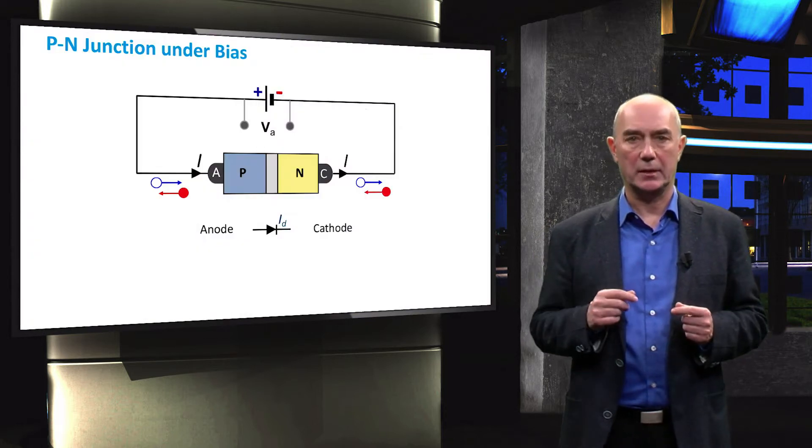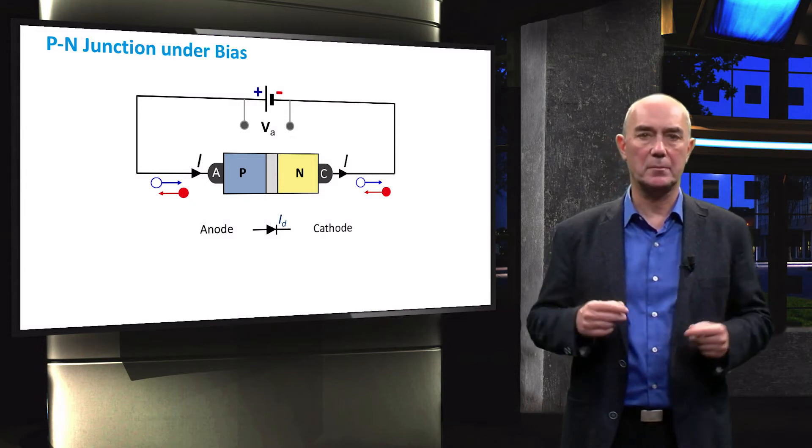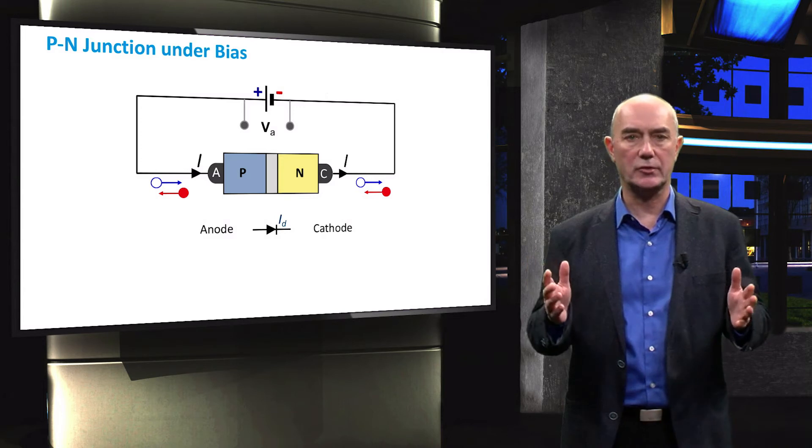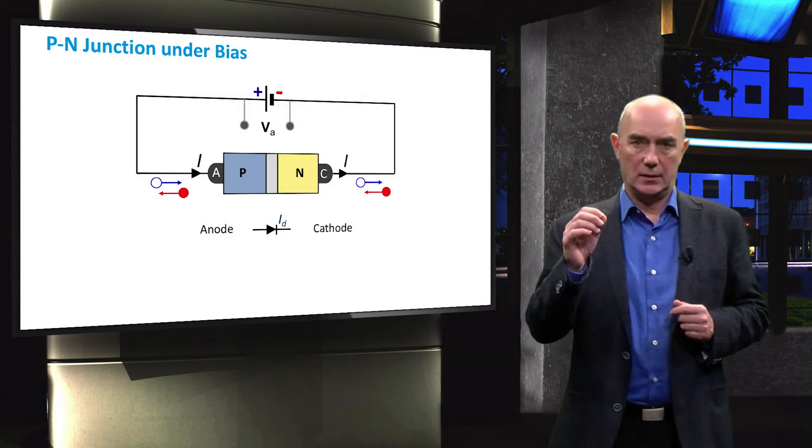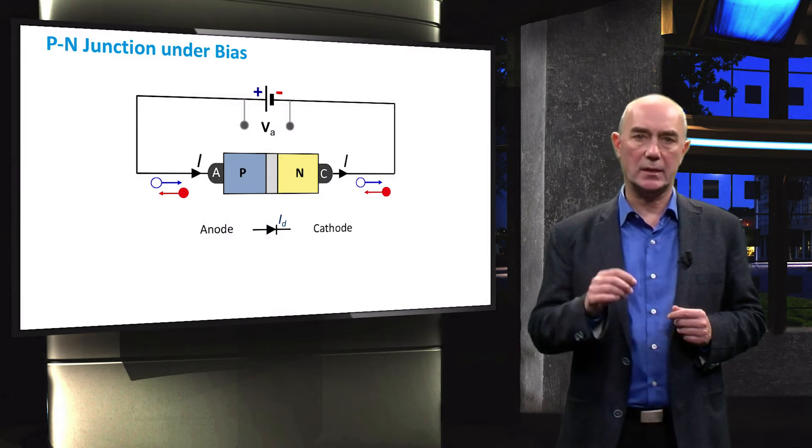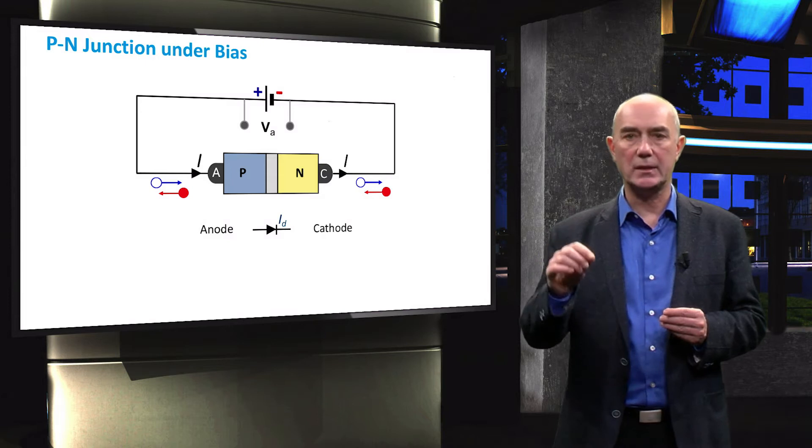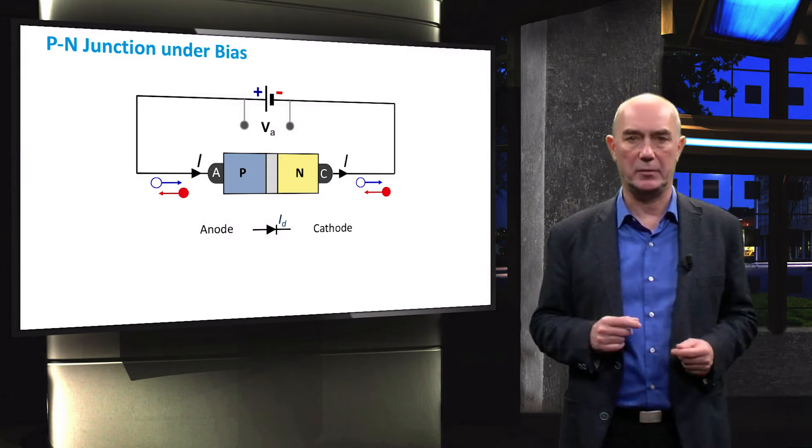Let's start with a short recap. In this slide you can see our now familiar PN junction with a voltage applied to it. This particular diode is under forward bias. This means that the voltage applied to the P-type region is positive with respect to the N-type region.